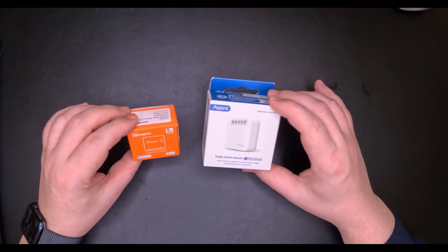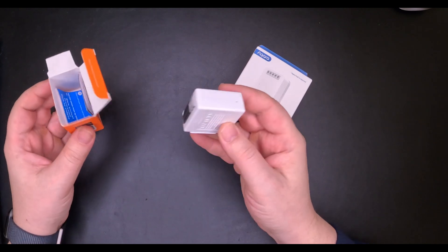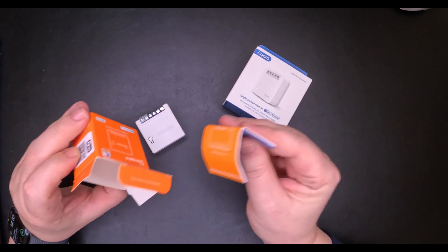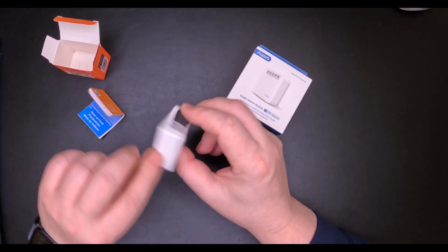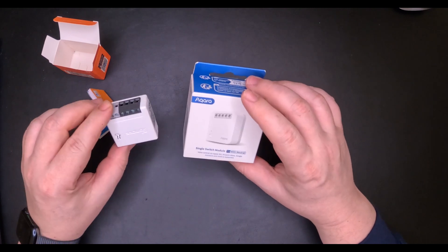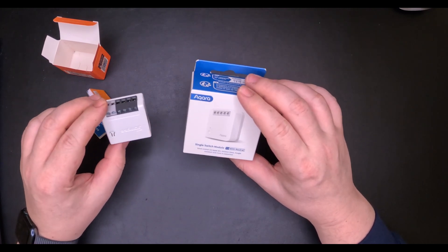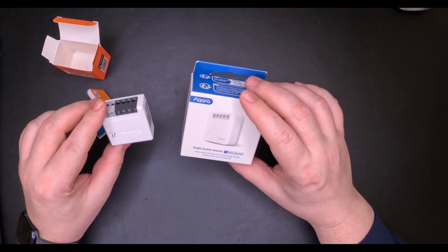Let's start with the Sonoff Zigbee Mini. Inside we're gonna find the relay and an instruction manual. The relay itself is very small. For both versions I chose the ones that work with a null connection. That means that the router capability of both relays will be enabled.